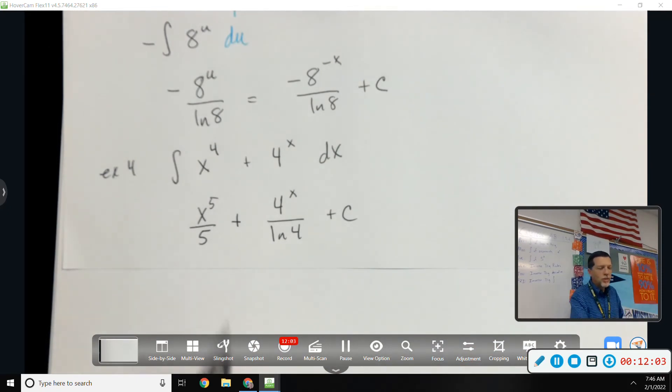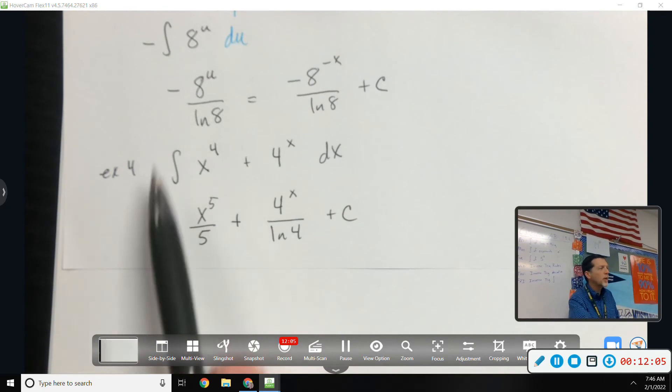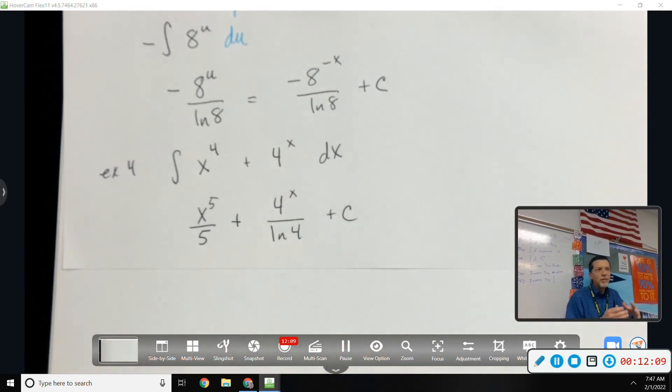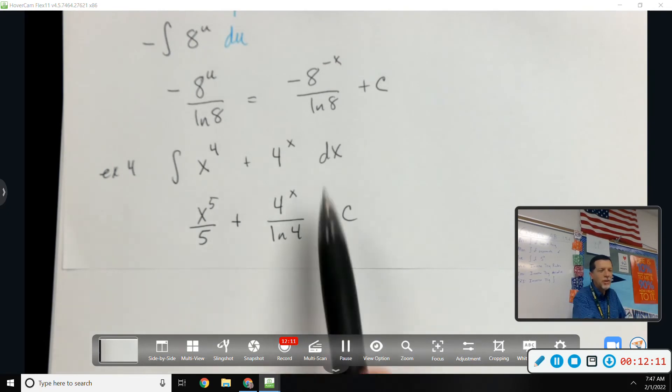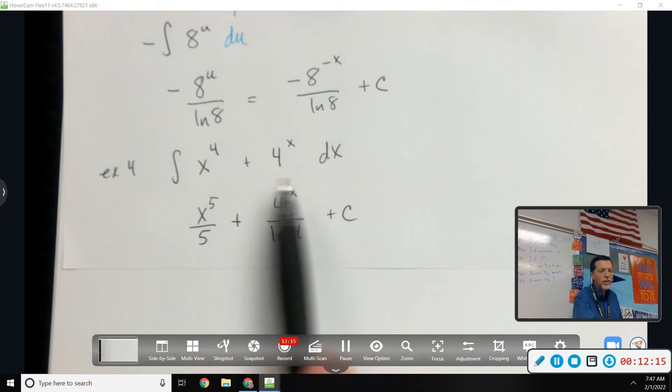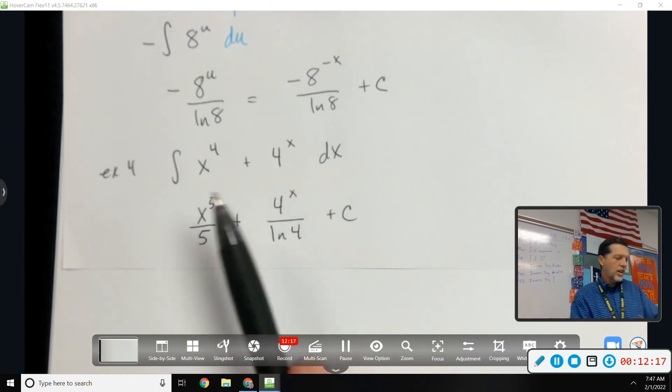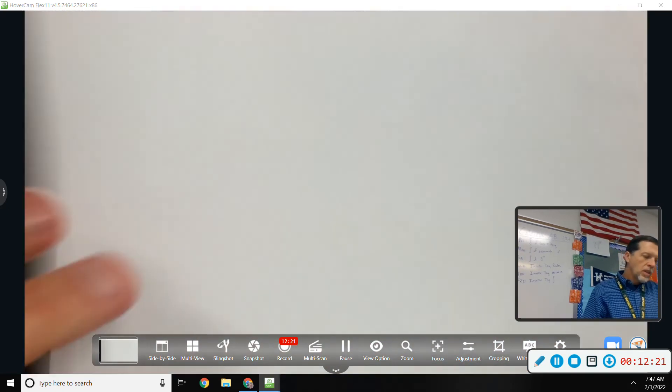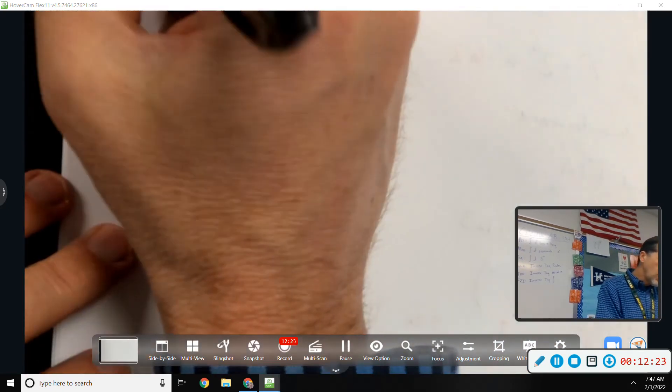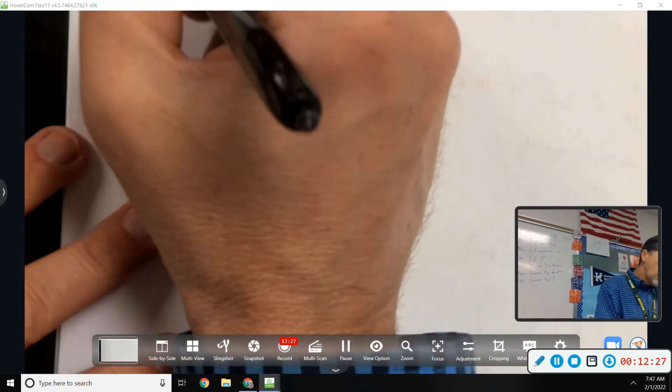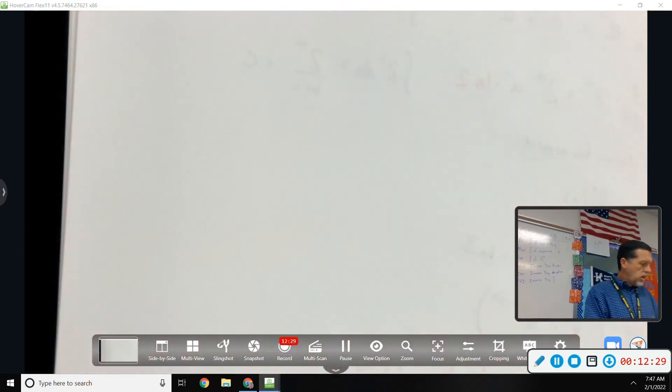So, this is one of those where if we're just working with powers, everybody gets them right. If we're just working with exponents, everybody gets them right. But we jumble them up together and people start thinking, well, wait a minute, do I plus 1 on this or does this stay X to the fourth? And so, this one is trying to illustrate or remind us the difference of those two things.